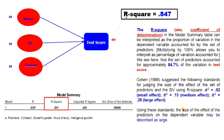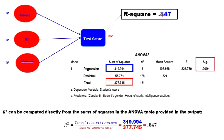R-square is computed as the sum of squares of regression divided by the sum of squares of total. That is, SSR divided by SST gives you the proportion of variance explained by the model.